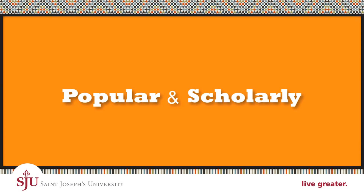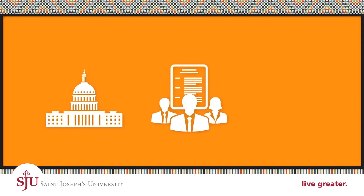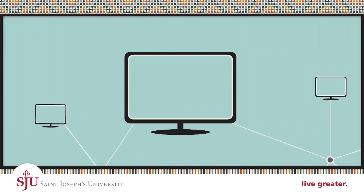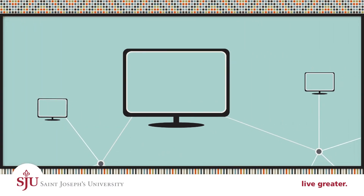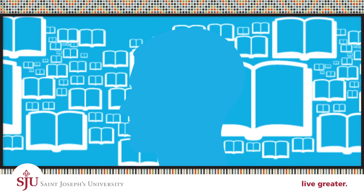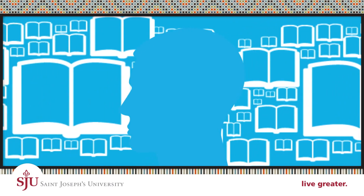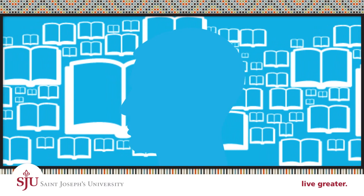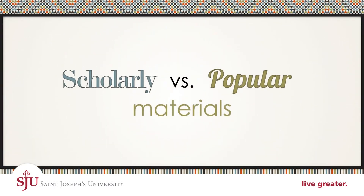Besides popular and scholarly articles, there are also reputable articles that are not peer-reviewed. These may include government and industry reports or conference proceedings, which are also found in our databases and can be used for research papers. It is important to use your judgment when selecting articles; if you're not sure about a source, ask a librarian or your instructor.